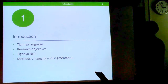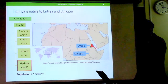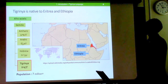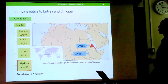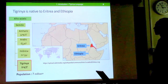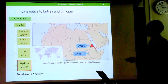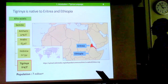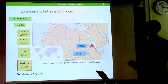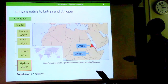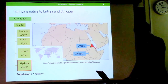Tigrinya is spoken in Eritrea and Ethiopia, which are found on the eastern part of Africa, and it's spoken by over 7 million people in both these countries and other communities in the world. Tigrinya is a member of the Semitic languages, which also includes Amharic, Arabic, Hebrew, and other languages. These languages share common morphological patterns and some syntax.